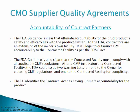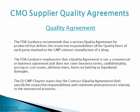The EU identifies the contract giver as having ultimate accountability for the product. Regarding the quality agreement itself, the FDA guidance recommends that a written quality agreement be produced that defines the respective responsibilities of the quality units of each party involved in the GMP contract manufacture of a drug. The FDA guidance further emphasizes key requirements for these agreements.